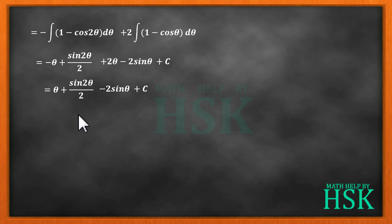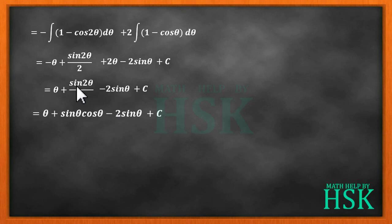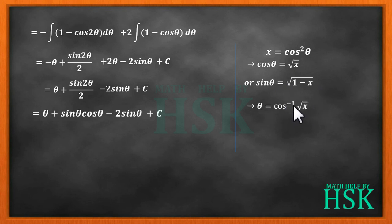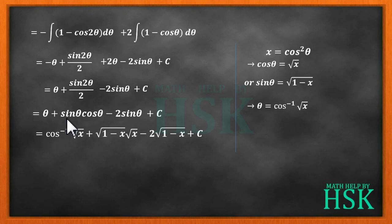This 2θ and minus θ gives me θ, plus sin 2θ/2, minus 2 sin θ plus C. Now the integral was given in terms of x, so we substitute the value of θ in terms of x to get the final answer. I write sin 2θ as 2 sin θ cos θ — the 2 in the numerator and denominator cancel to give sin θ cos θ. We had substituted x equal to cos²θ, so cos θ equals √x, sin θ equals √(1 minus x), and θ equals cos⁻¹(√x).